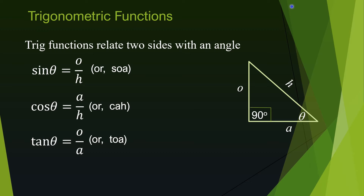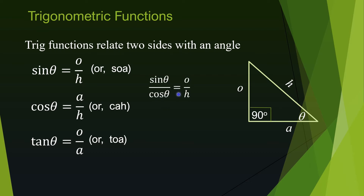For example, if you know the hypotenuse and the angle, you can solve for the adjacent using the cosine function, or for the opposite using the sine function. Now let's have a little fun — let's divide sine by cosine. Sine is opposite over hypotenuse.